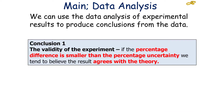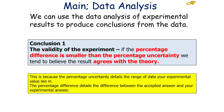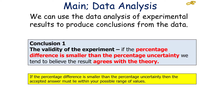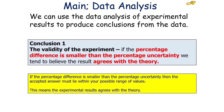We can use the data analysis of experimental results to produce conclusions from the data. The first conclusion you can discuss is the validity of the experiment. If the percentage difference is smaller than the percentage uncertainty, we tend to believe the result agrees with the theory. This is because the percentage uncertainty details the range of data your experimental value lies in, whilst the percentage difference details the difference between the accepted answer and your experimental answer. If the percentage difference is smaller than the percentage uncertainty, then the accepted answer must lie within your possible range of values, meaning your experimental results agree with the theory.